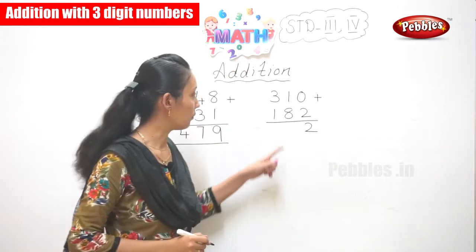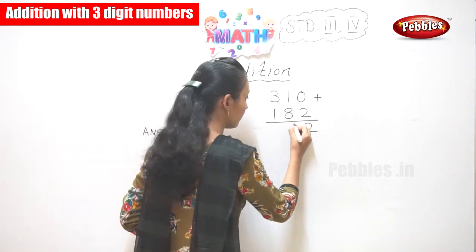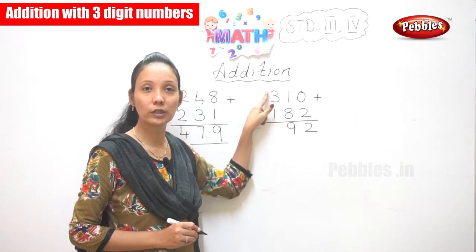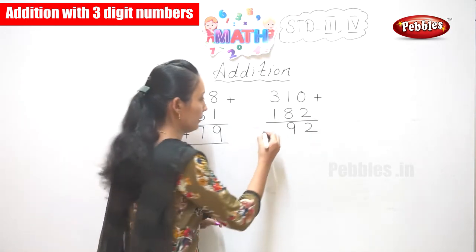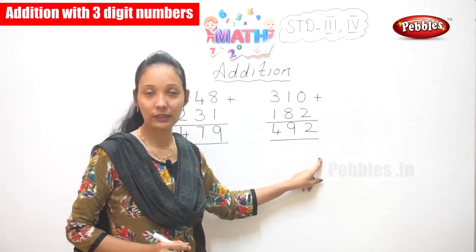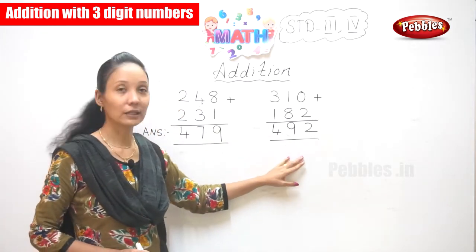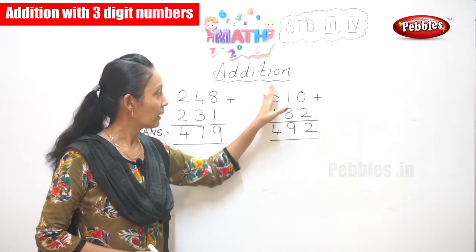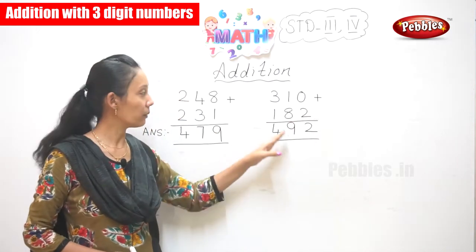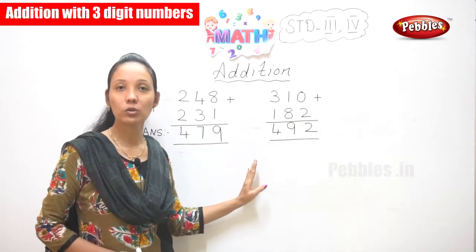Okay, it's 2 itself. Now 8 plus 1 — you get 9. Next, 3 plus 1 — you get 4. So your answer is 492. These two sums you have not carried over or done anything — it's directly you have done your addition.